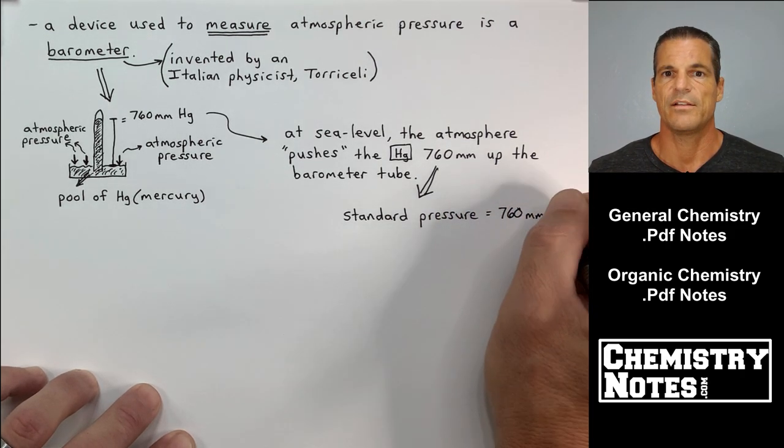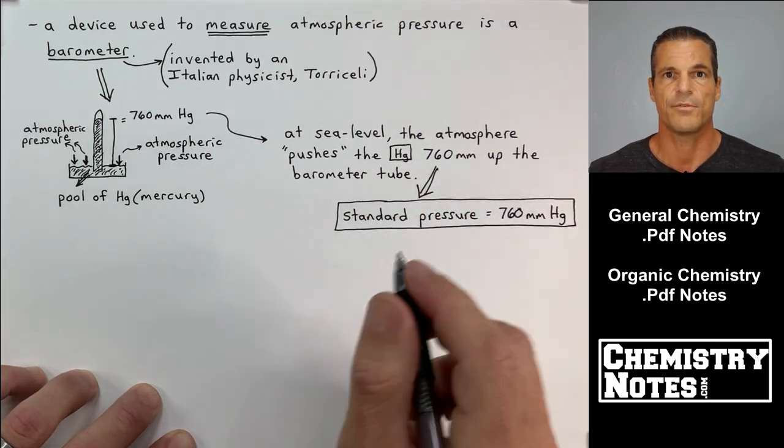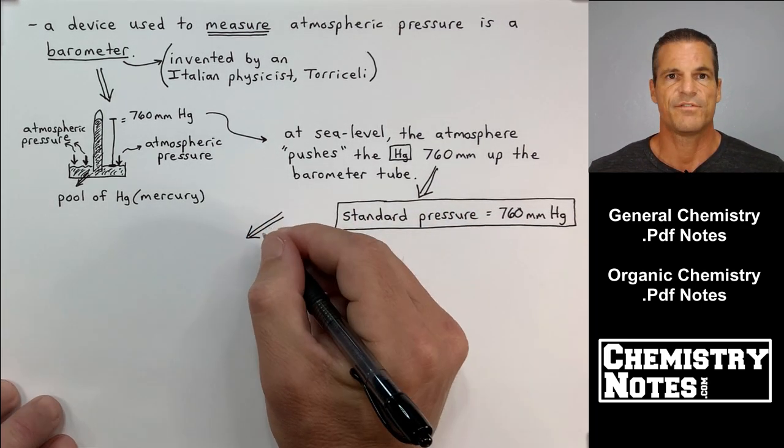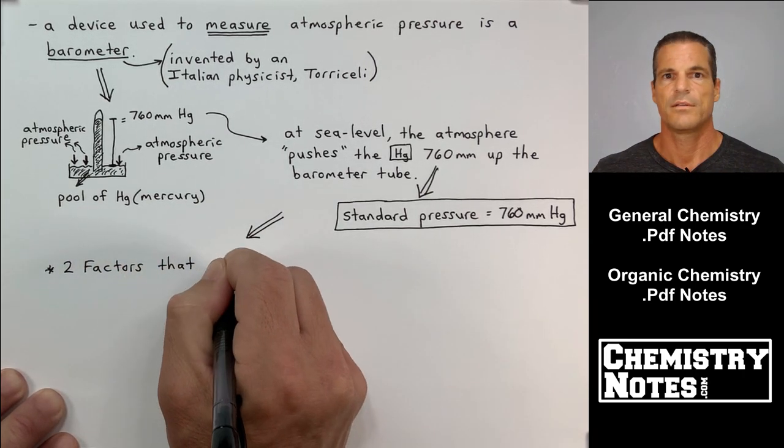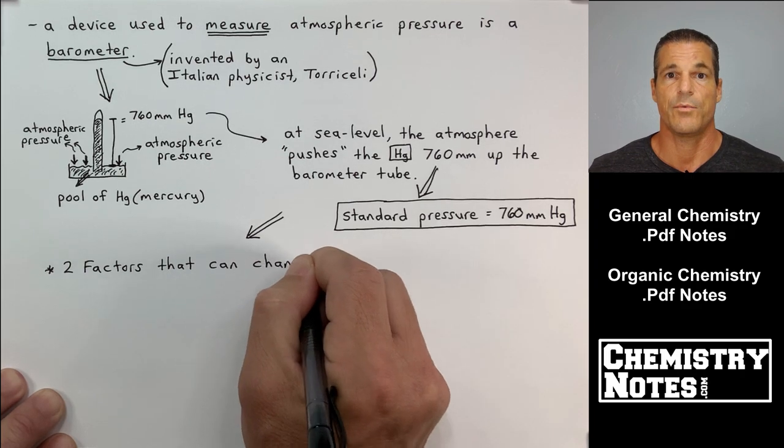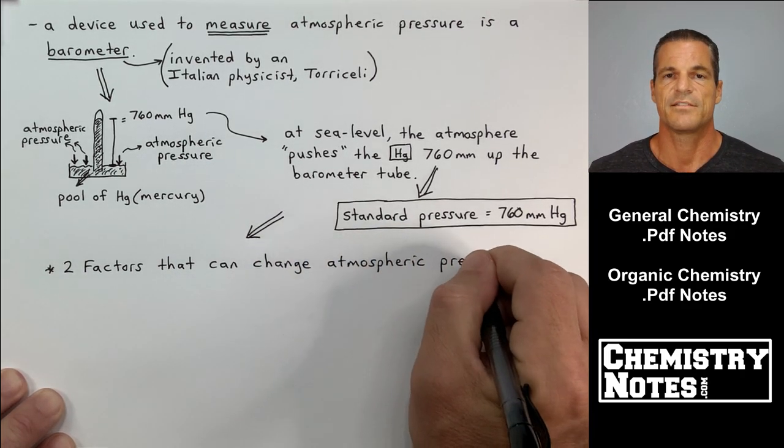That little mmHg is one particular unit for pressure. Units of distance, for example, are inches, meters, kilometers, furlongs, centimeters. We have different units for pressure as well. We'll get to that in just a bit.